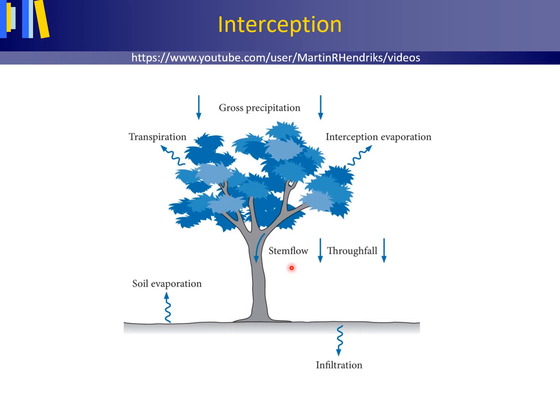Stem flow is the process of water running down the main stem of a tree. This can be a large quantity per unit of time, as the precipitation that is captured by leaves and branches in the vegetation canopy is concentrated along the smaller area of the stem.